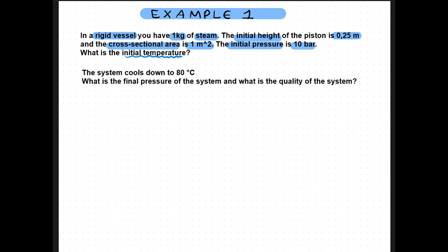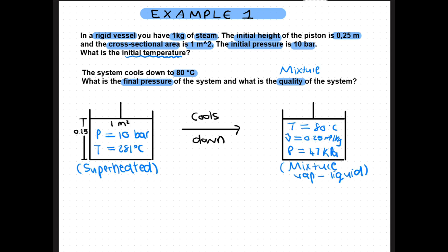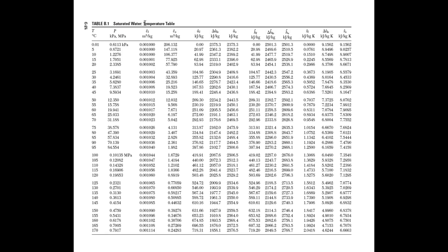Then the system cools down to 80 degrees celsius. What is the final pressure of the system and what is the quality of the system? Since they asked for quality we already know that this is a mixture. So we start at the saturation tables. Since temperature is given we use the temperature table. Then we need to look at 80 degrees.